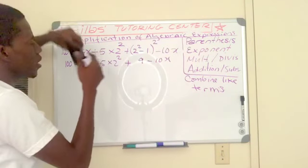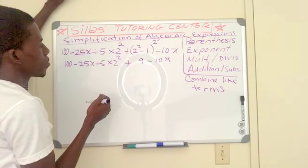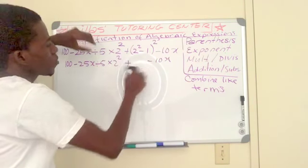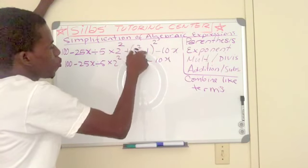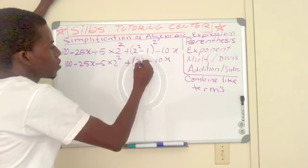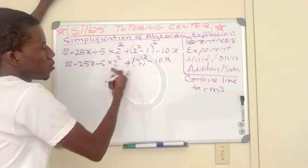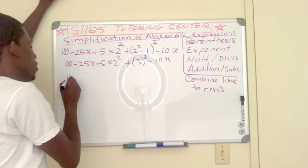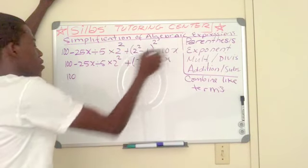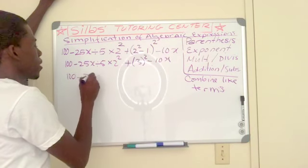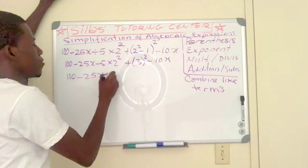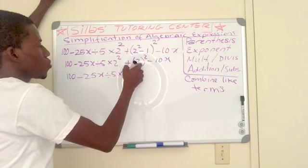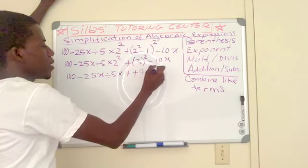Now I do the exponents. Two squared is four, minus one — three squared is nine. So: 100 minus 25X divided by 5 times two squared is four, plus three squared is nine, minus 10X.